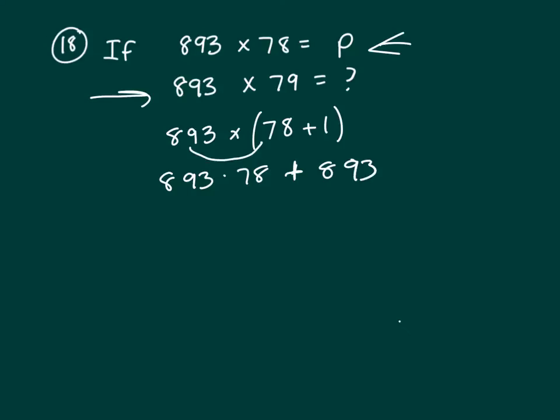893 times 78 plus 893 times 1, which is 893. And what's another name for 893 times 78? Well, that's P. So P plus 893 is your answer.